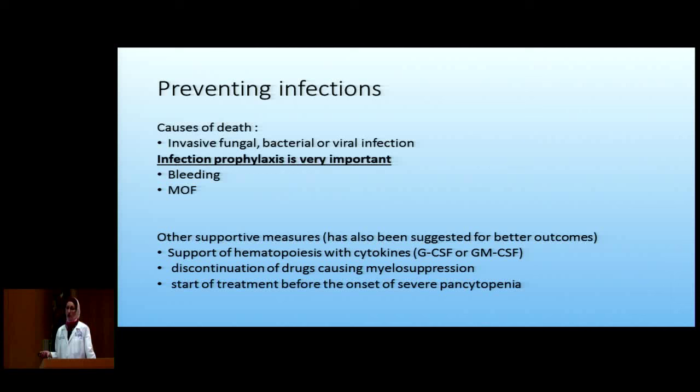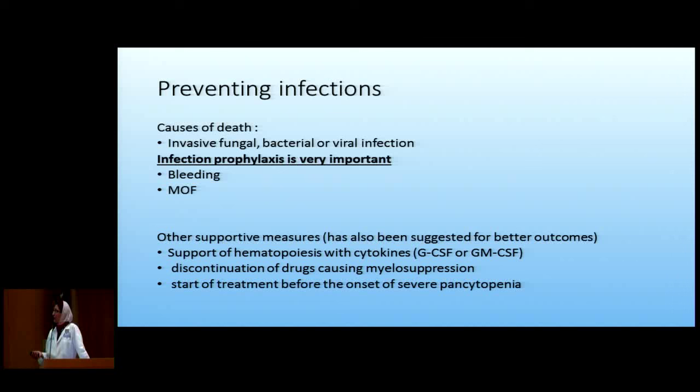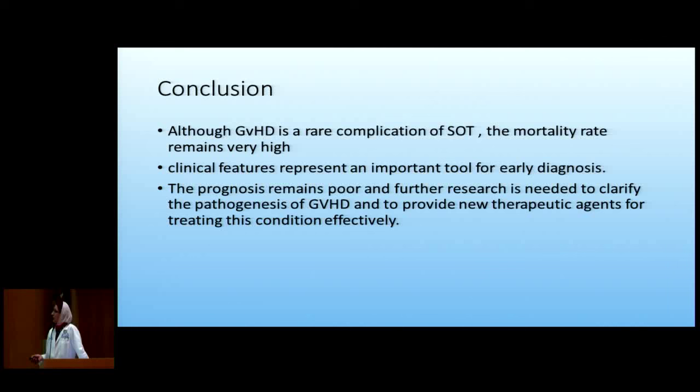When we start patients on immunosuppressive medication, preventing infection is as important as starting treatment, because the cause of death in GVHD after solid organ transplant — like stem cell transplant — is actually infections, not GVHD itself. So infection prophylaxis is very important. Patients can also have bleeding and multi-organ failure. Supportive measures like G-CSF can help, and any drugs that can cause cytopenias should be stopped to try to prevent reaching pancytopenia.